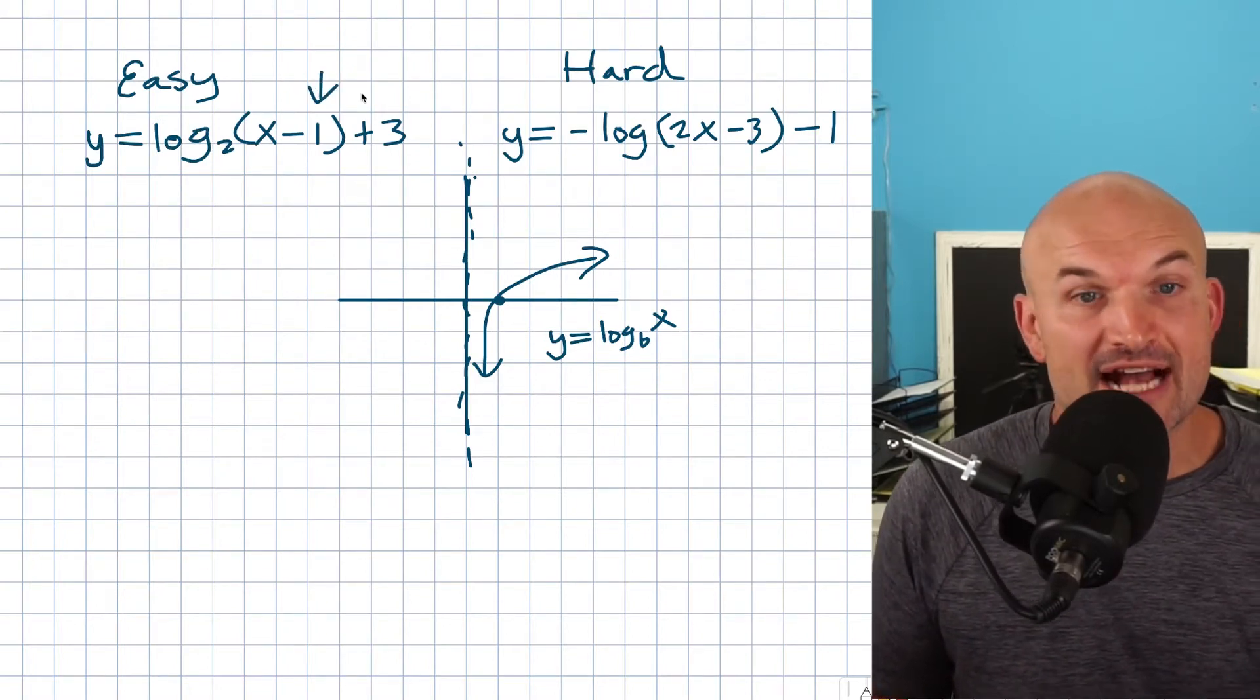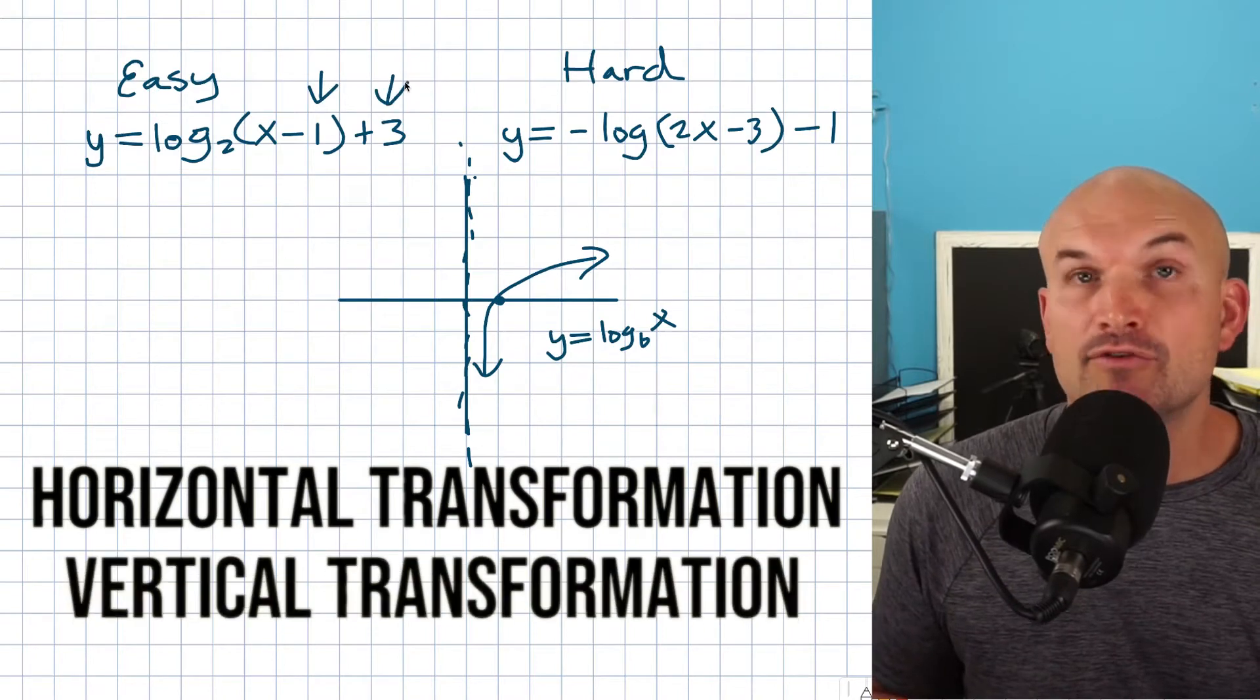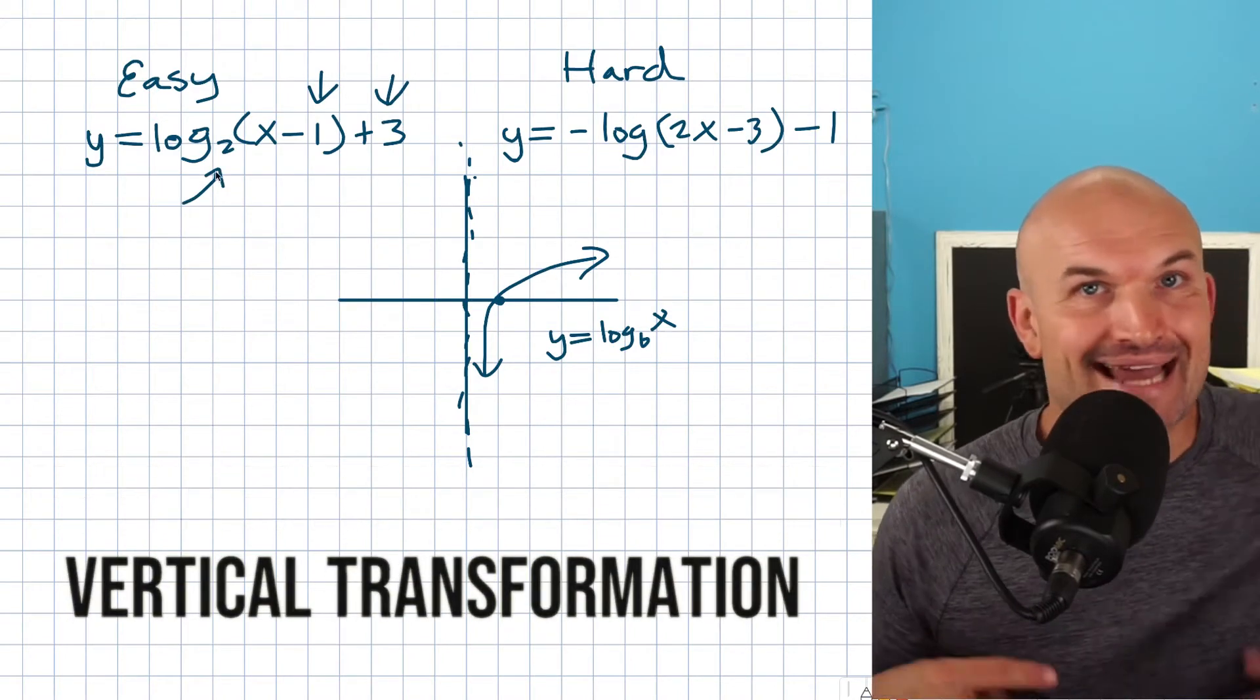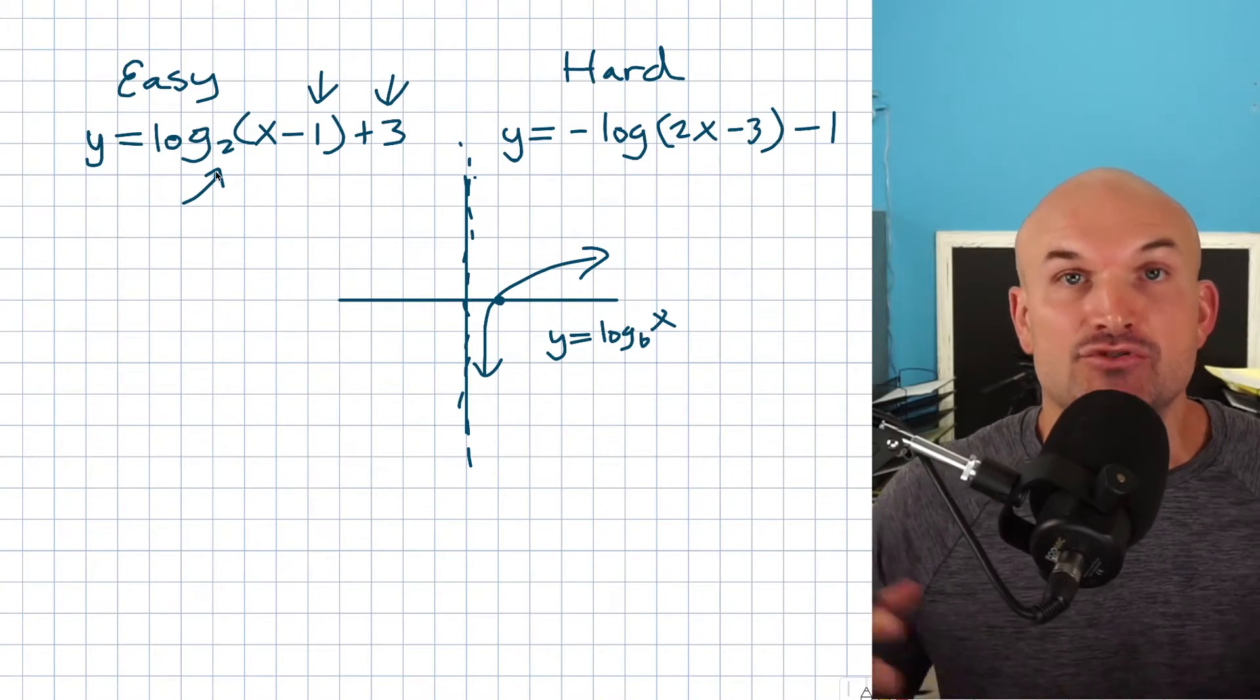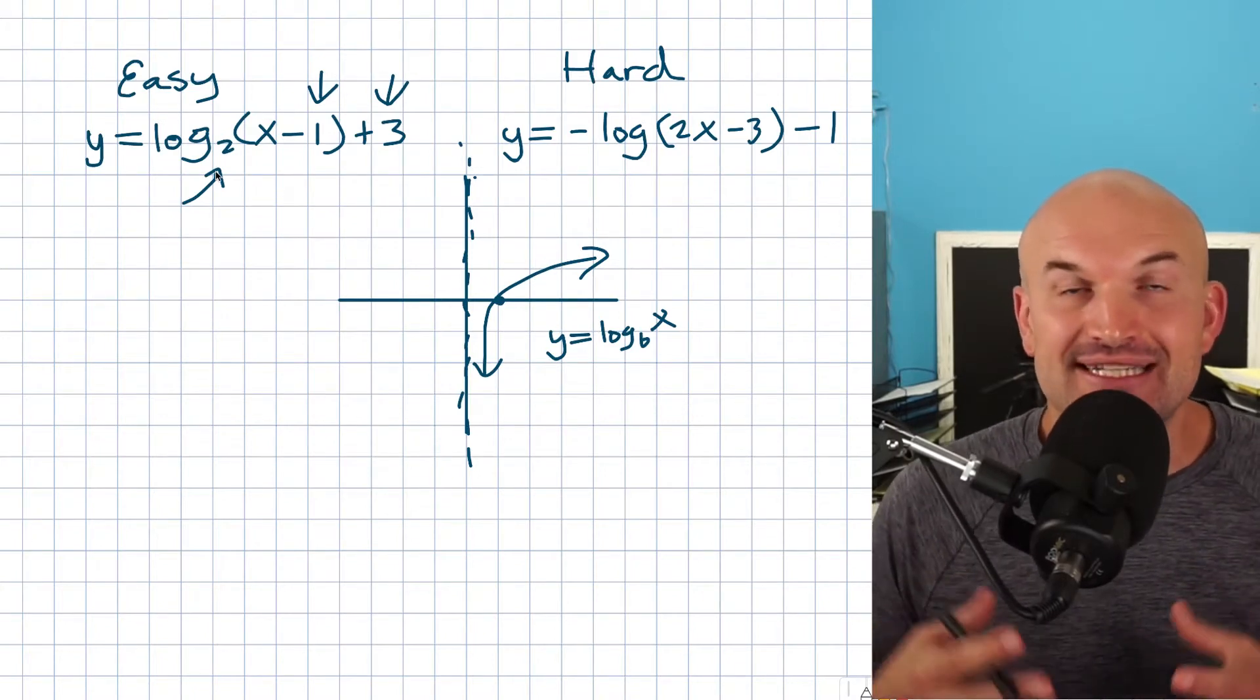So the main thing is we only have two transformations. We have a horizontal transformation and we have a vertical transformation. Remember the base 2 is not actually a transformation. That is going to be impacting like the stretch and compression of the graph, but it's actually not a transformation.